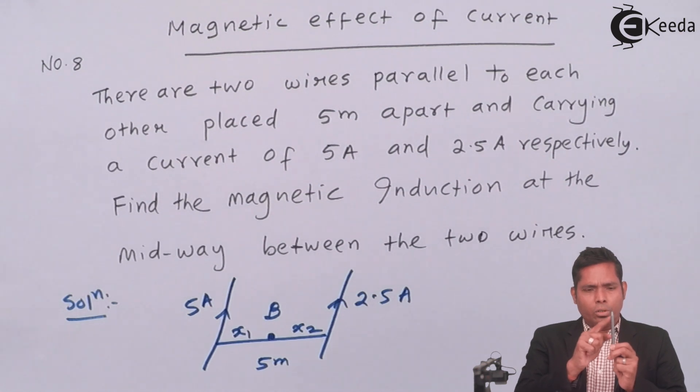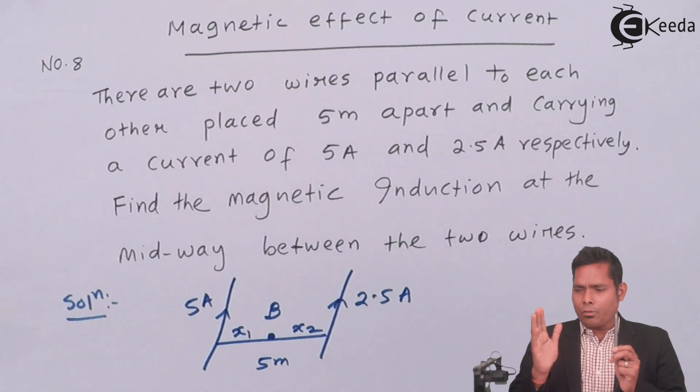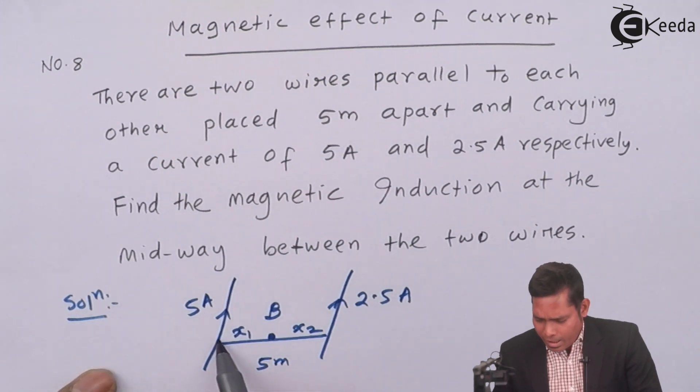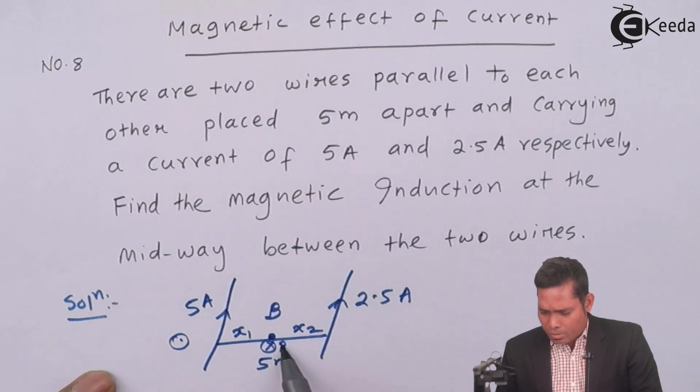And for this wire, this conductor, for this point, this will be out of the plane. You can see that for this conductor, this is coming out on this direction and going into this direction. This is what is B1.